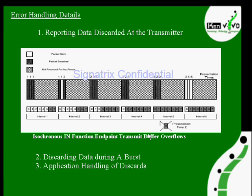Next we come to error handling details. There are three points here. First, reporting the data discarded at the transmitter. Second, discarding data during a burst application handling. Just look at this diagram — you will get some knowledge on these error handling details. Isochronous in-function endpoint transmit buffer overflows — we have seen this scenario.